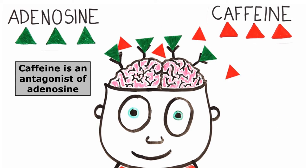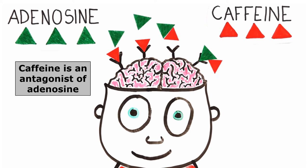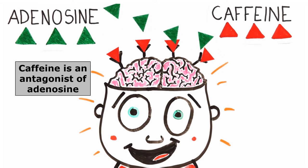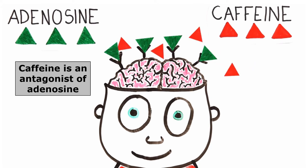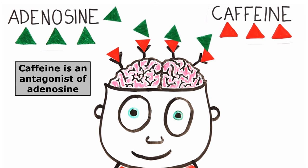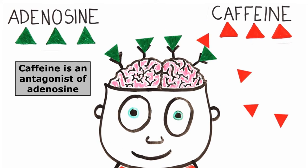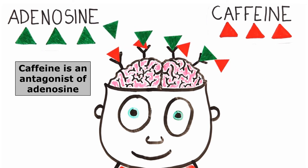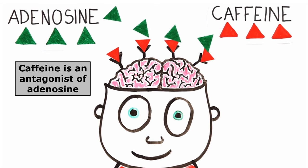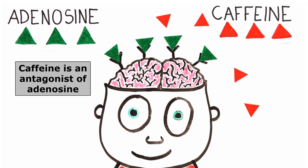Caffeine is the most used psychoactive substance in the world. It is partially an antagonist of a chemical called adenosine. Adenosine builds up in the body while we're awake and decreases when we sleep — it is related to sleep. This is why caffeine, when it blocks adenosine receptors, makes us aroused and makes it difficult to sleep.